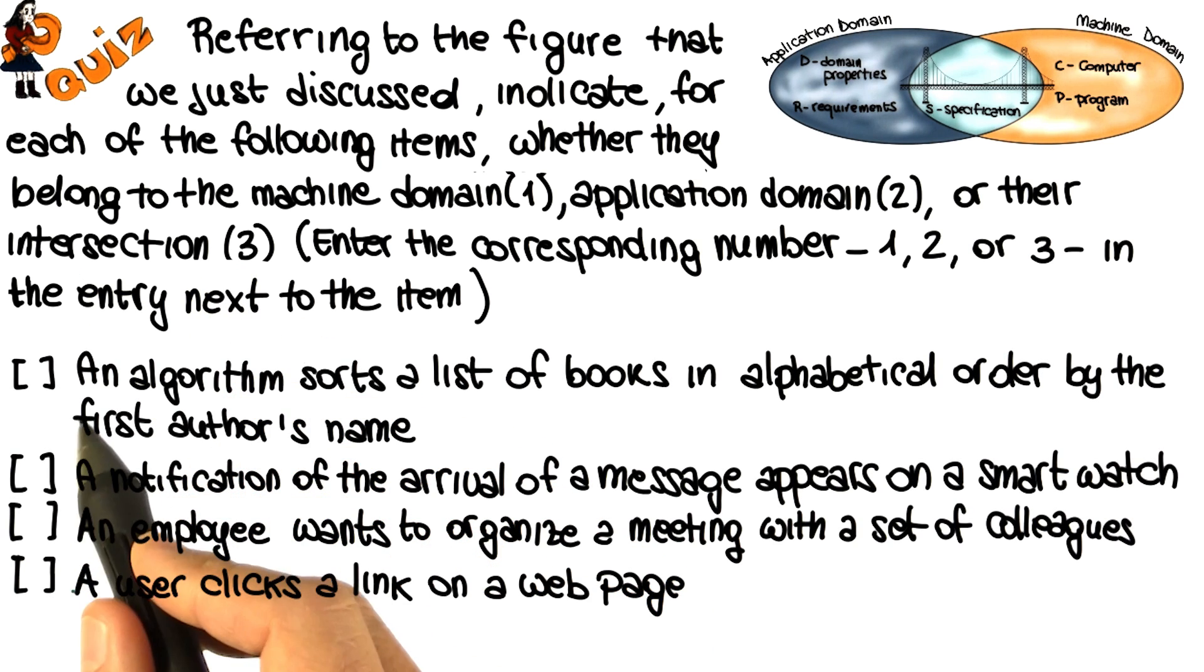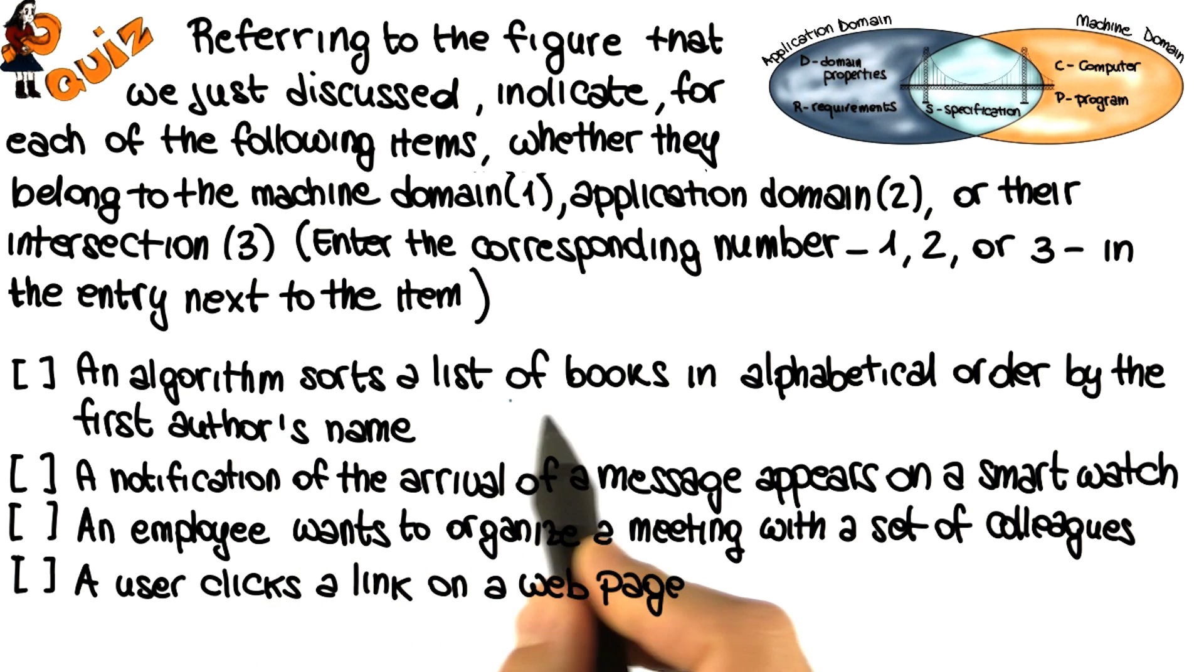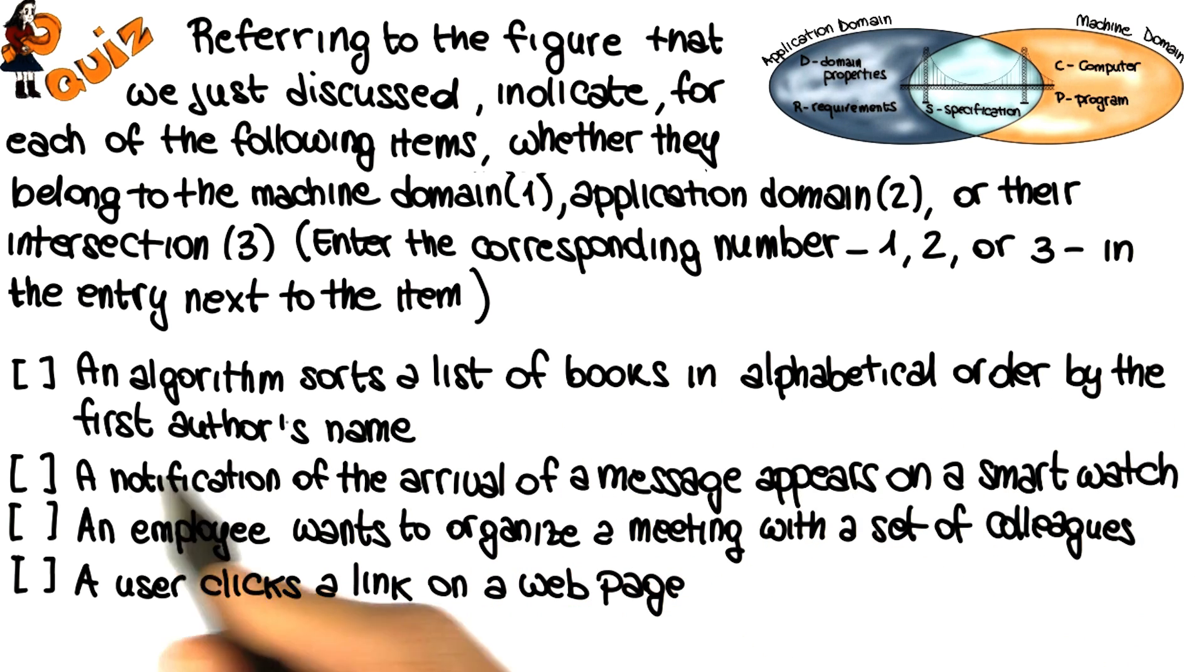So this is the list of items, so let me read it. An algorithm sorts a list of books in alphabetical order by the first author's name. A notification of the arrival of a message appears on a smartwatch. An employee wants to organize a meeting with a set of colleagues. And finally, a user clicks the link on a web page.